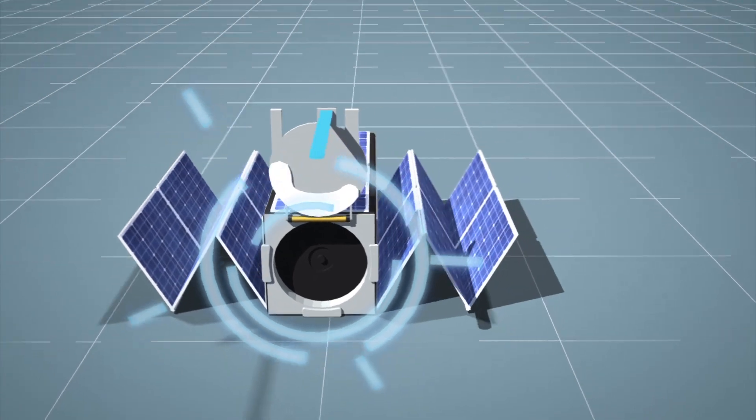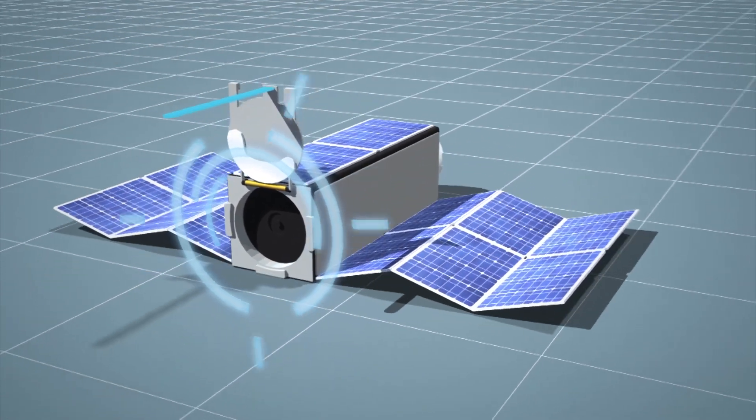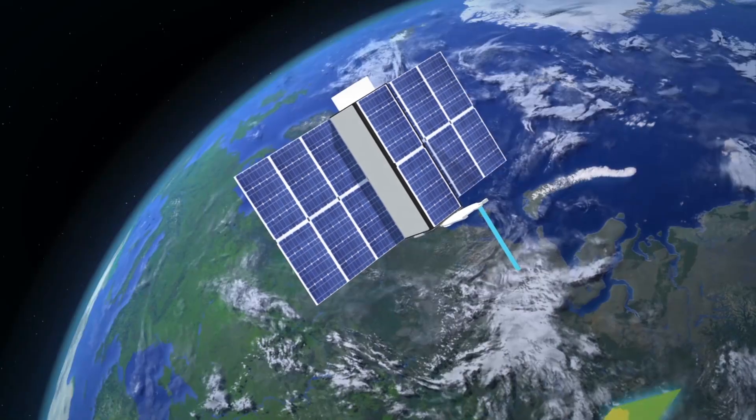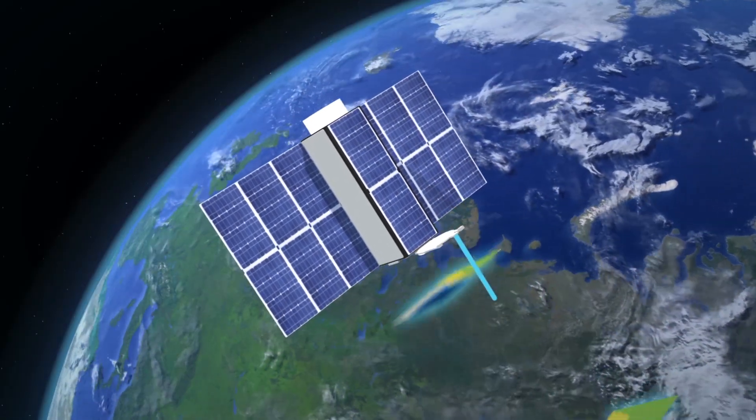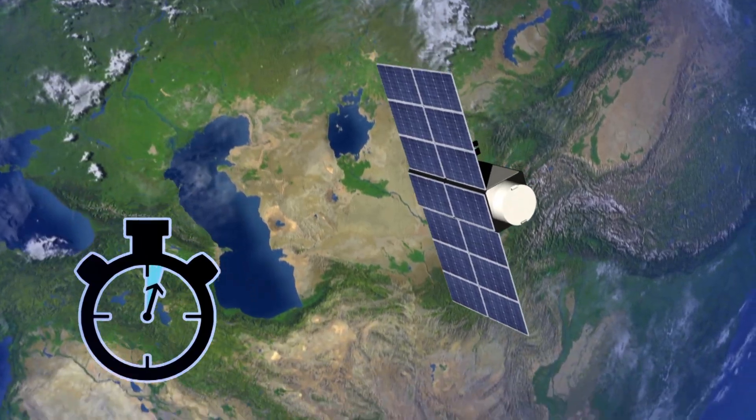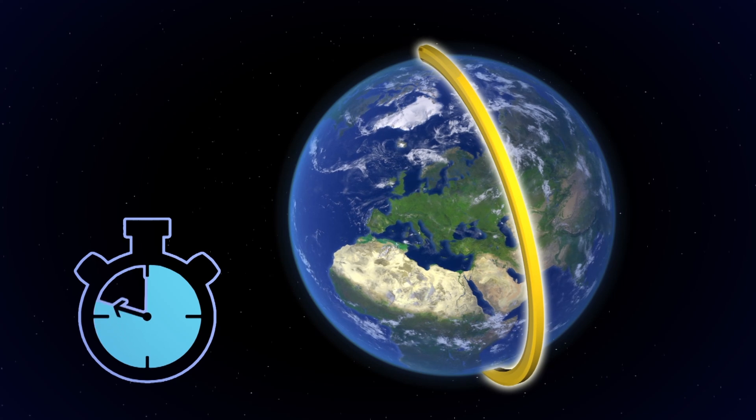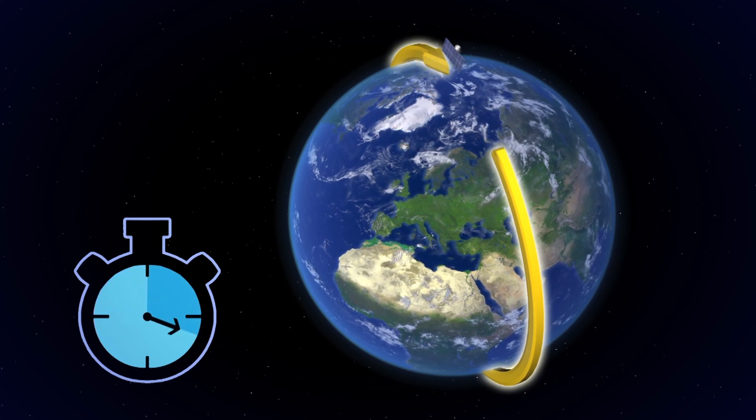The solar-powered Dove satellites weigh about 4 kilograms each and are equipped with a series of optics and sensors. These include a main camera that can capture images at 3 to 5 meter resolution. The shoebox-sized satellites will continually photograph the surface of the Earth and complete an orbit approximately every 90 minutes.